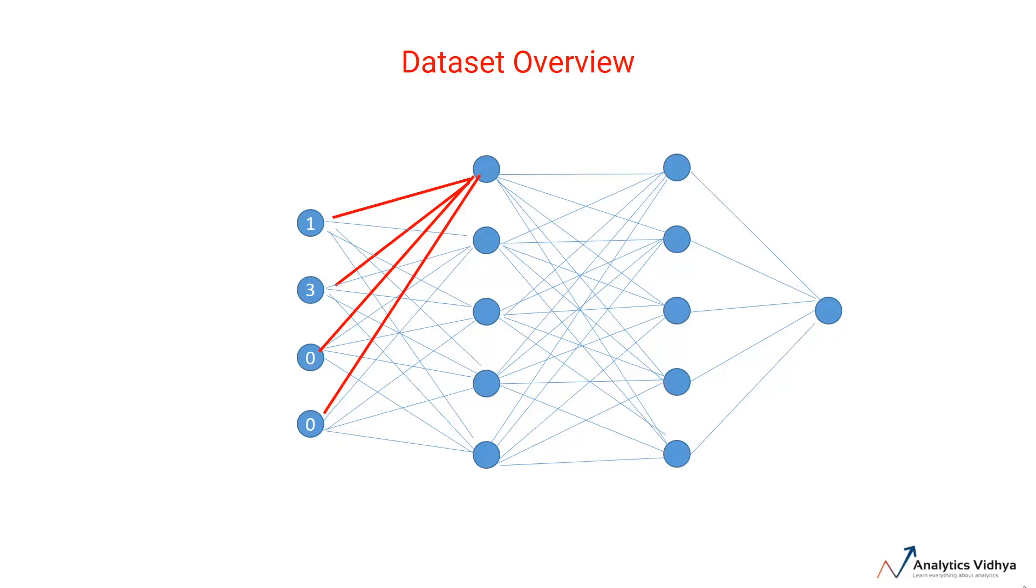This neuron receives input from all the neurons in the previous layer and combines it with its own set of weights represented by the red edges. After applying some activation function, it calculates the output known as hidden activation for this neuron. The output or hidden activation will serve as input for the next layer neurons.